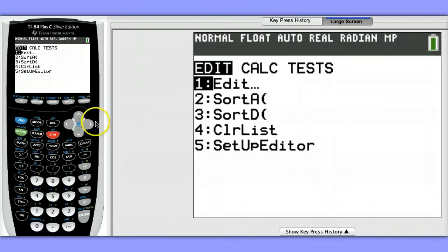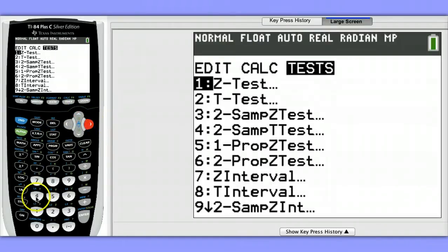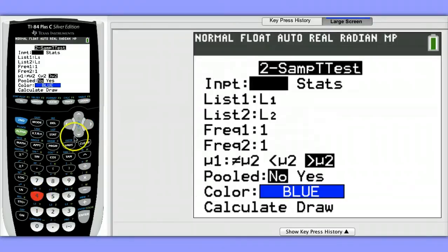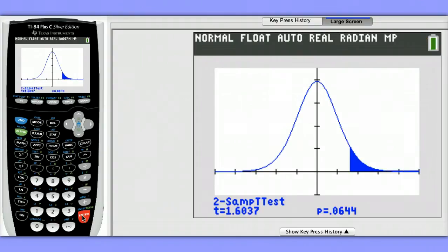Another option we could have done would be to choose draw. Let me show you what I mean by that. Two sample t-test. At the very bottom, instead of calculate, we could have chosen to draw the t-distribution associated with this example. So this is the t-distribution with the degrees of freedom that was calculated. And we can see the test statistic and p-value occurring at the bottom, and we see the shading of the right tail here, since we chose a one tail test.